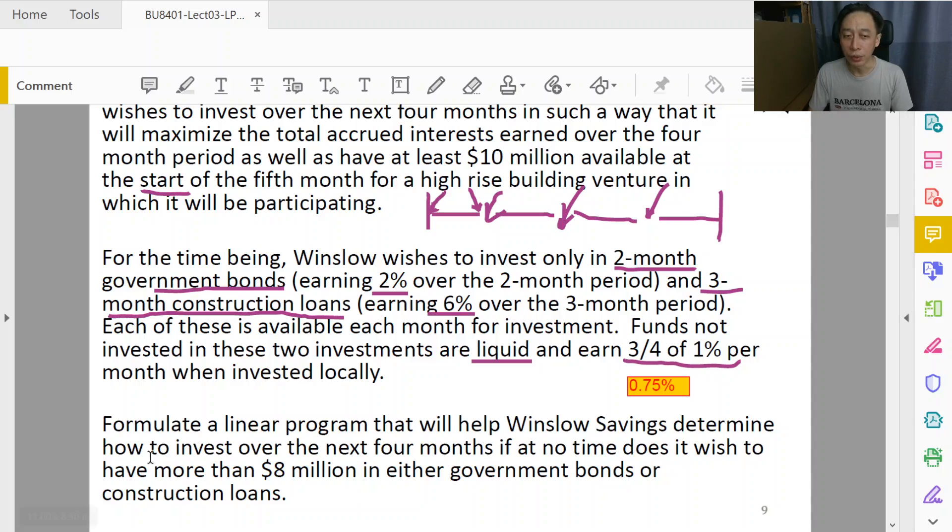At no time does it wish to have more than 8 million in government bonds or construction loans. This part sounds like performance requirements, right? No more than 8 million in government bonds or construction loans.